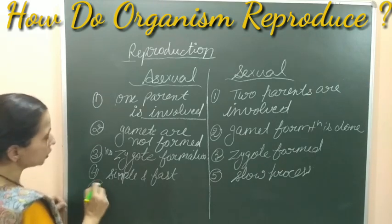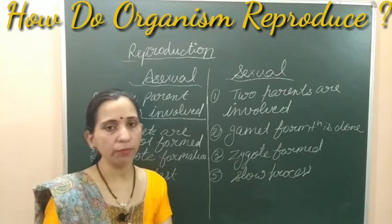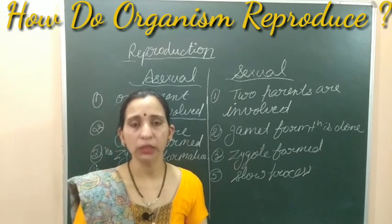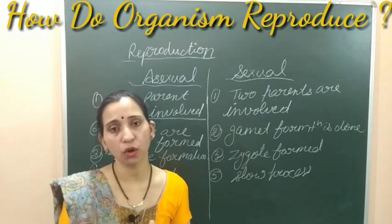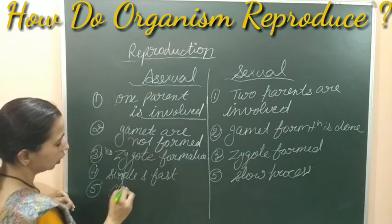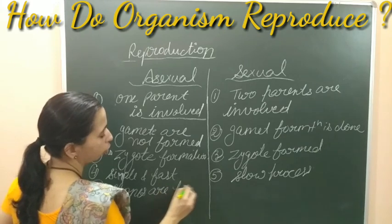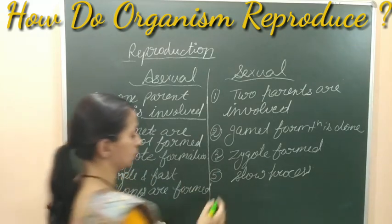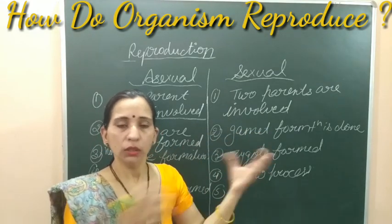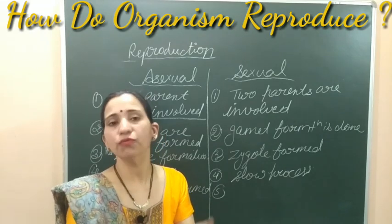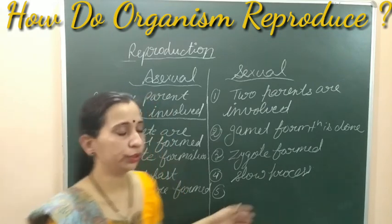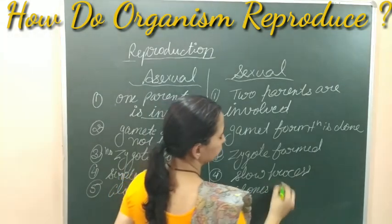In asexual reproduction, since only one parent is involved, the offspring formed are exact copies of their parents. These exact copies are known as clones. So in asexual reproduction, clone formation occurs — the offspring are exactly the same as the parents. In sexual reproduction, since two gametes are involved and they fuse, the offspring are not exact copies — clones are not formed.